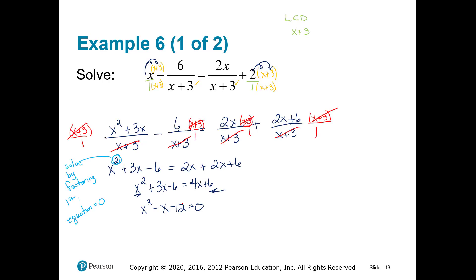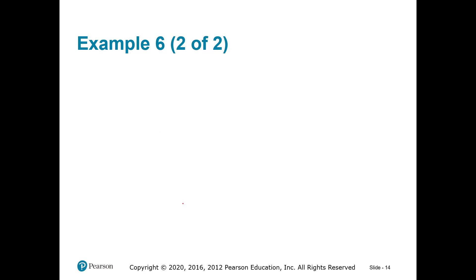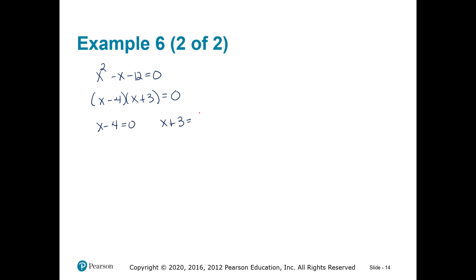Continuing on the next page with more room: x squared minus x minus 12 equals zero. Now you have to factor that. I got (x minus 4) and (x plus 3) equals zero. I suggest pausing this video if you did not factor it — pause it, factor that, see if we get the same thing, and then start the video again. Each parenthesis gets set equal to zero, which means I'm going to have two answers — in this case, two different answers.